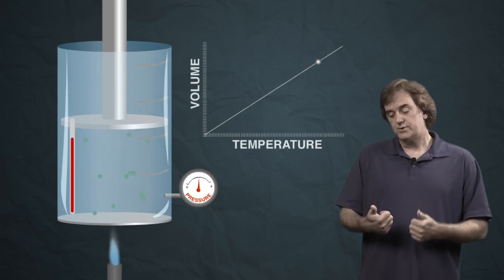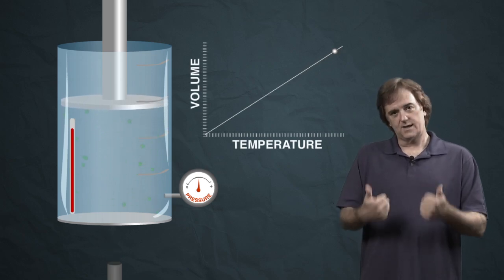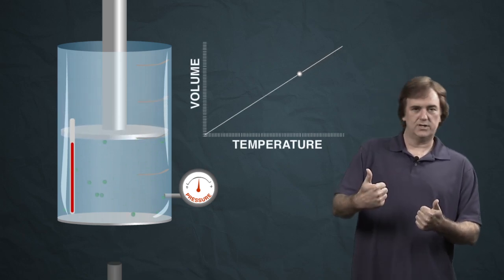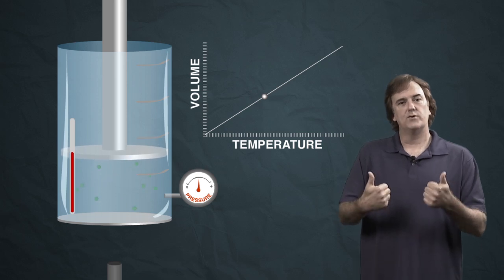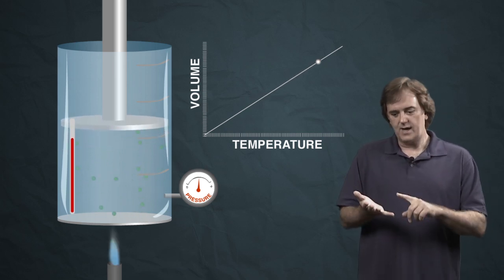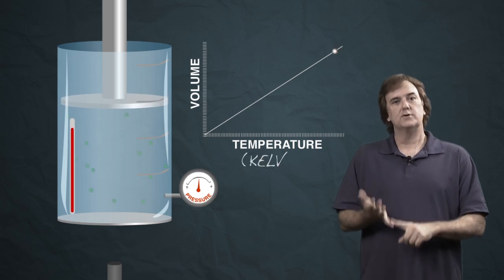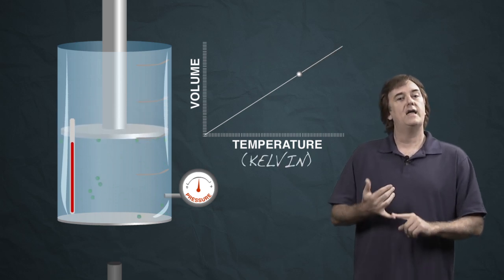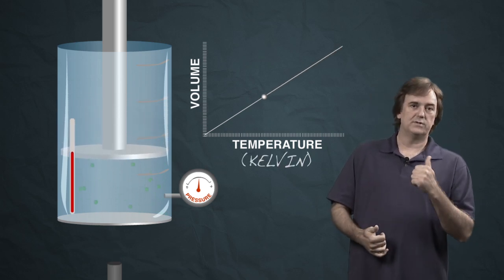Temperature and volume are directly proportional. You increase one, you increase the other. If you want them to be directly proportional exactly, you've got to use absolute temperature. So you use the Kelvin temperature; if you double the Kelvin temperature, you will double the volume.